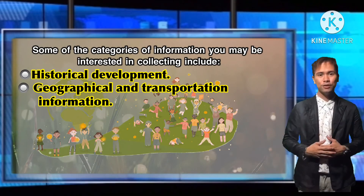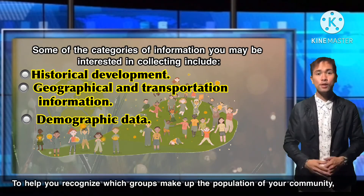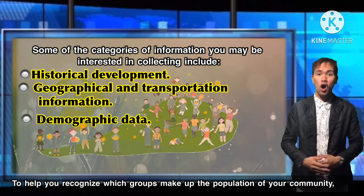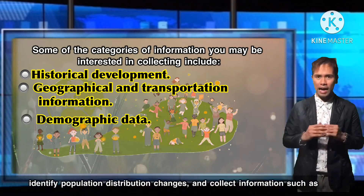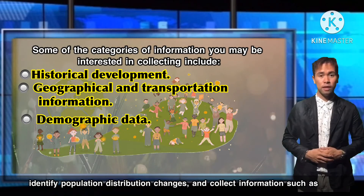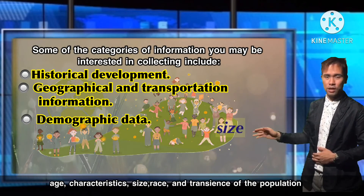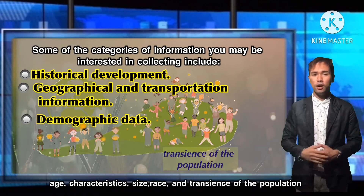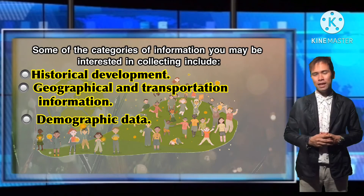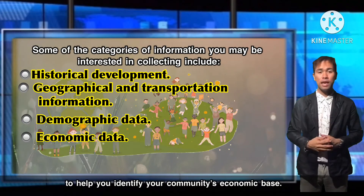Another category is Demographic Data — to help you recognize which groups make up the population of your community, identify population distribution changes, and collect information such as age, characteristics, size, race, and transience of the population. Next, another category is Economic Data — to help you identify your community's economic base.